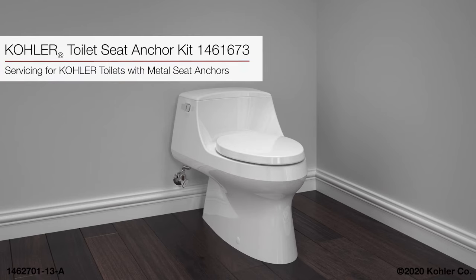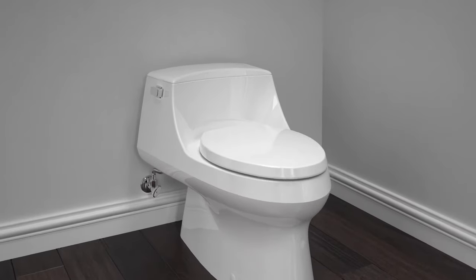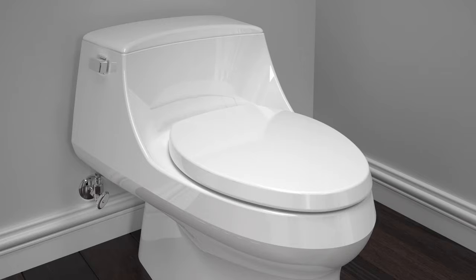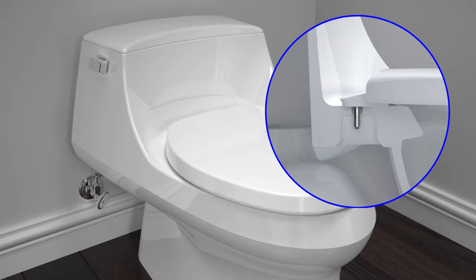Installing new toilet seat anchors on your Kohler one-piece toilet. This video will show you how to remove the old toilet seat anchors and install Anchor Kit 1461673. Installing this kit will correct the issues of a loose seat or spinning toilet seat hardware.